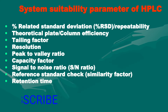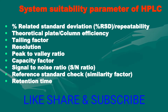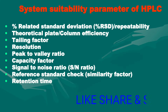These are the system suitability parameters of HPLC. Number one: percentage relative standard deviation, percentage RSD or repeatability. Number two: theoretical plate or column efficiency. Number three: tailing factor. Number four: resolution. Number five: peak to valley ratio. Number six: capacity factor. Number seven: signal to noise ratio. Number eight: reference standard check, also known as similarity factor. And the last one is retention time.